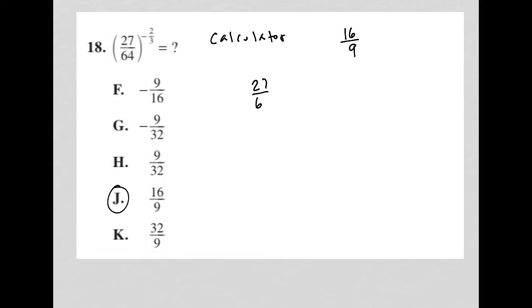So 27 over 64 to the negative two-thirds power. The first thing I would deal with is this negative sign in the exponent. Anytime you have a negative exponent, all you're going to do is write the reciprocal, so this becomes 64 over 27 of the fraction that you had, and then raise it to the positive power. That negative sign literally means that you should make the fraction the reciprocal of the original fraction.